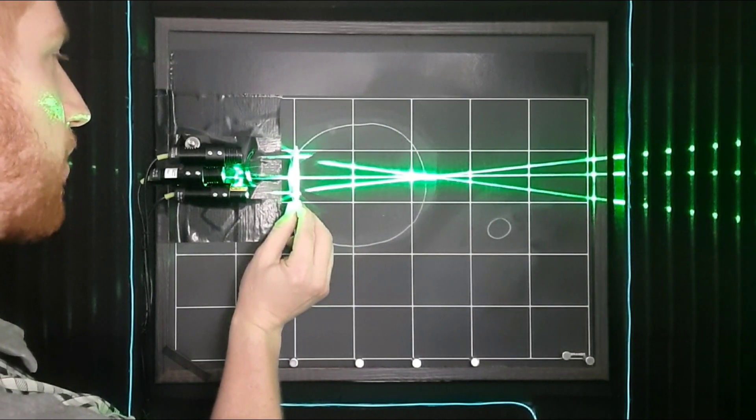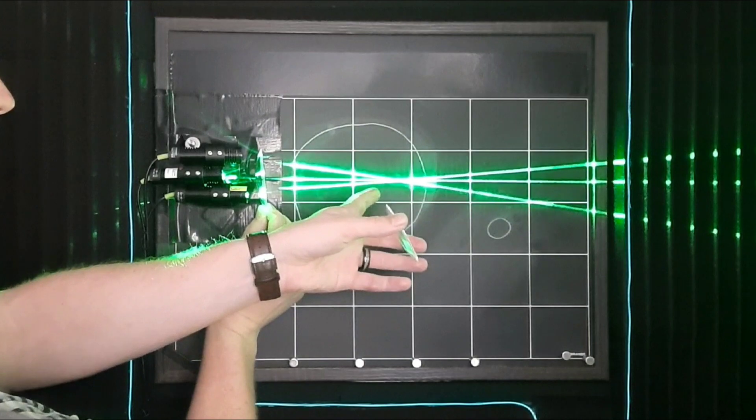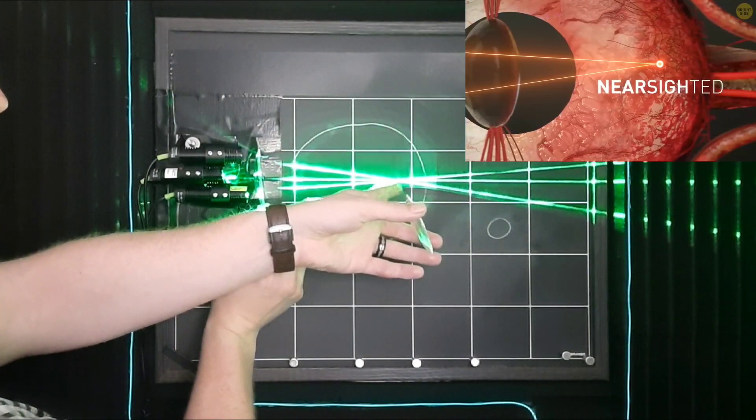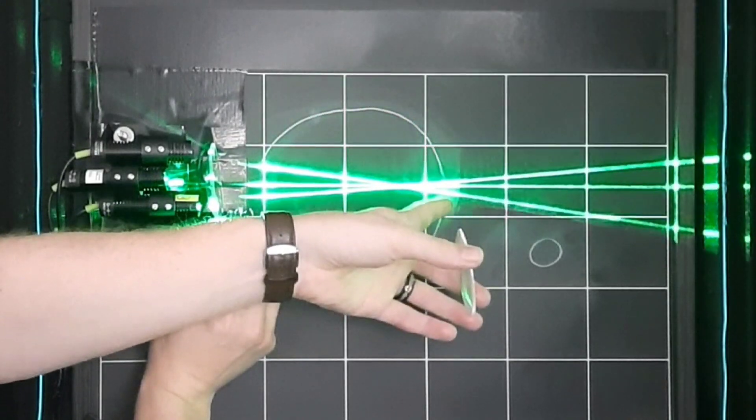Being near-sighted means that the light focuses too near. It focuses too soon. So the lens is focusing the light sooner than it should, so by the time it gets to the retina, those lines have spread out, and they're no longer a single up-close spot.